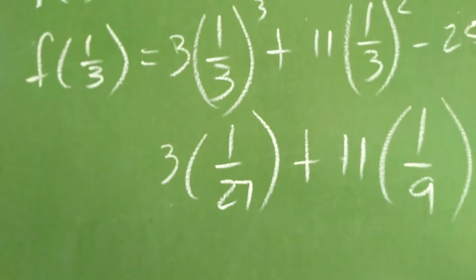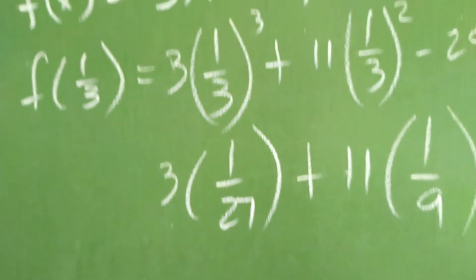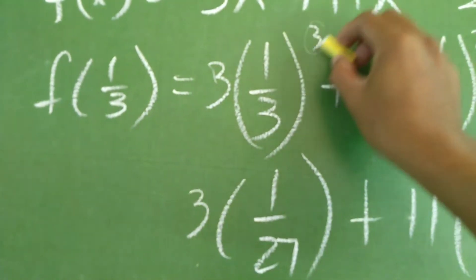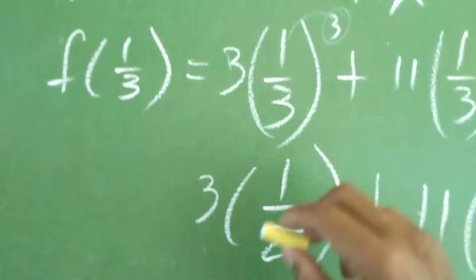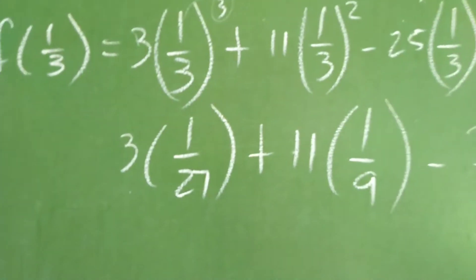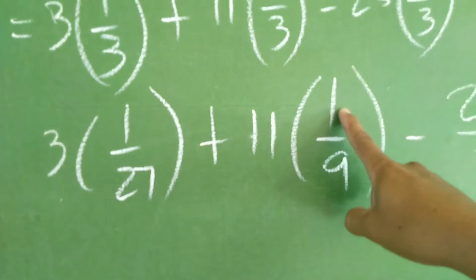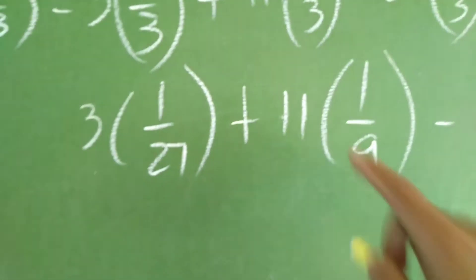Tignan nyo mabuti. Paulit-ulit po kayo, sir, saan nakuha yung 27? Nakuha yung 27 kasi, the exponent, 1 cube is still 1. How about 3 cube? 3 times 3 times 3, kaya 27. Ito naman, 1 squared kaya 1 and then 3 squared kaya naging 9.